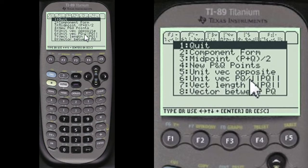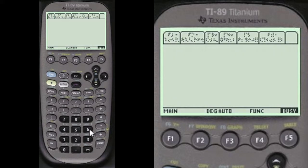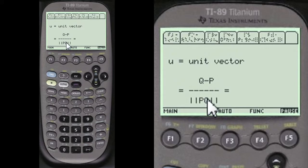We're going to choose number 6 here. Unit vector p, q. Here's the formula. q minus p over the magnitude or length of p, q.